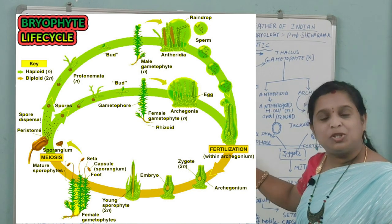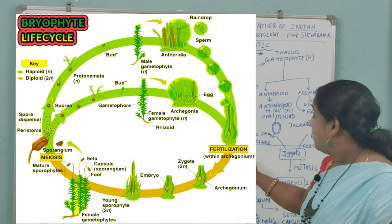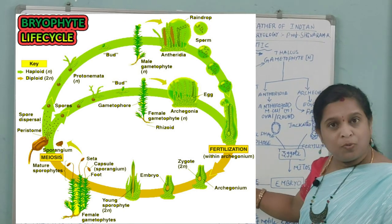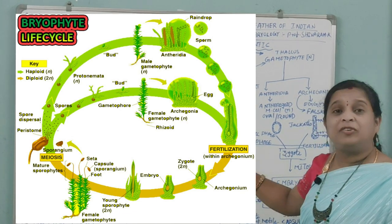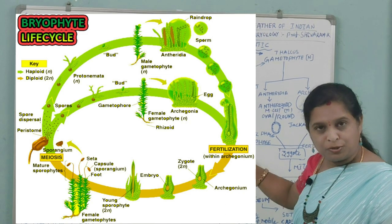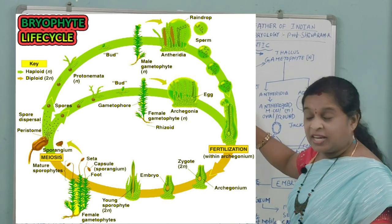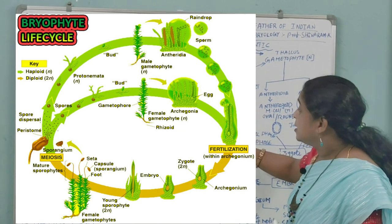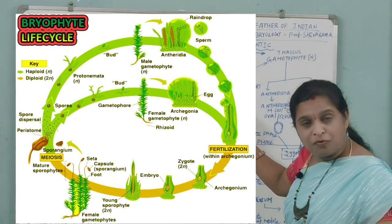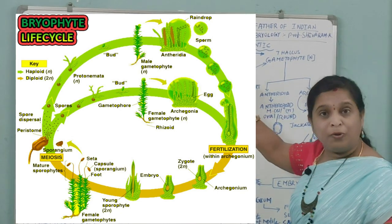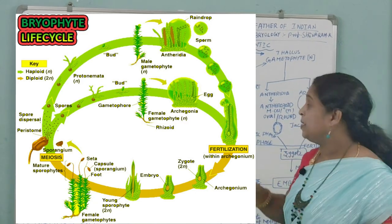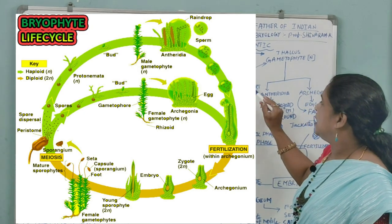The spore mother cells, which are diploid (2n), undergo meiosis — a reductional division — producing haploid (n) spores. This contrasts with the earlier mitosis, which is an equational division. The haploid spores then germinate. In mosses like Funaria, the spores germinate to develop into a primary protonema, then a secondary protonema, on which buds form. These buds germinate to form the gametophytic thallus.